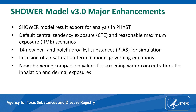Other updates include the addition of 14 new PFAS for simulation in the model. The program now includes 17 total PFAS, of which only two are volatile. Some of these PFAS have health guidelines and others do not, but they're included so health assessors can see the magnitude of their contribution to the inhalation and dermal pathways. The final major enhancement is the development of new showering comparison values from the shower model, which let health assessors screen water concentrations for inhalation and dermal exposures without running the shower model. They're currently available as a downloadable file in FAST version 2.1.